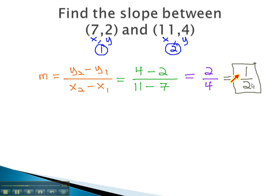This means for every 1 unit the graph rises, it will also run 2 units.